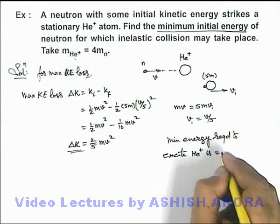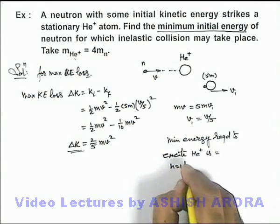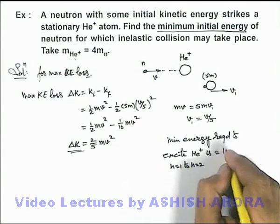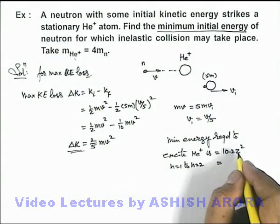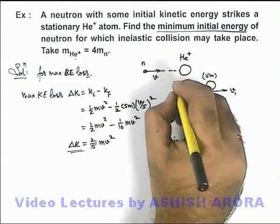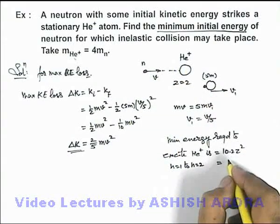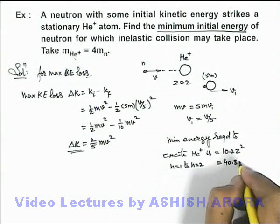This can be simply written as excitation from n equal to 1 to n equal to 2 which will be 10.2 z squared, and here it'll be 10.2 multiplied by 4 as for helium z is equal to 2, so this will be 40.8 electron volts.